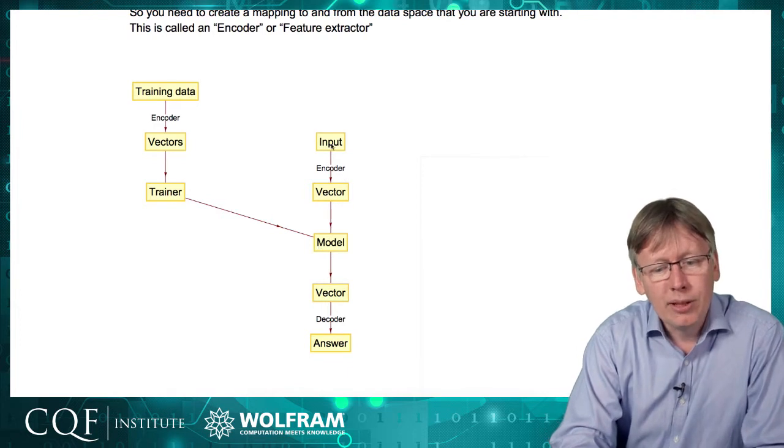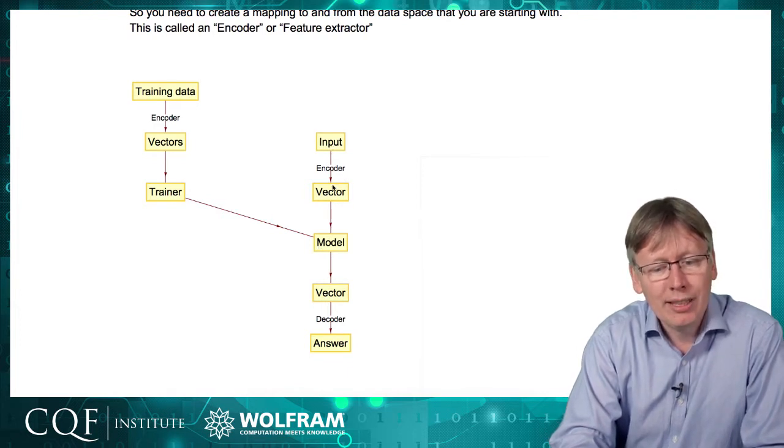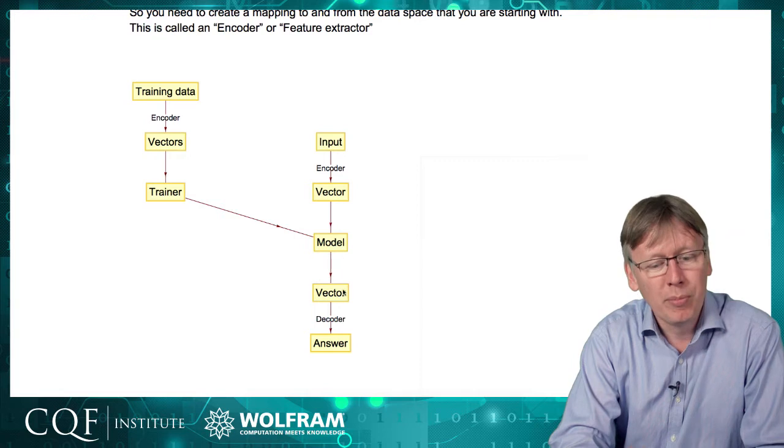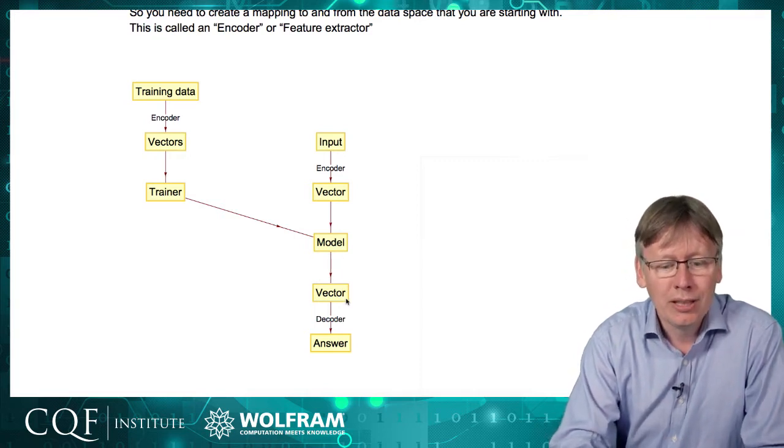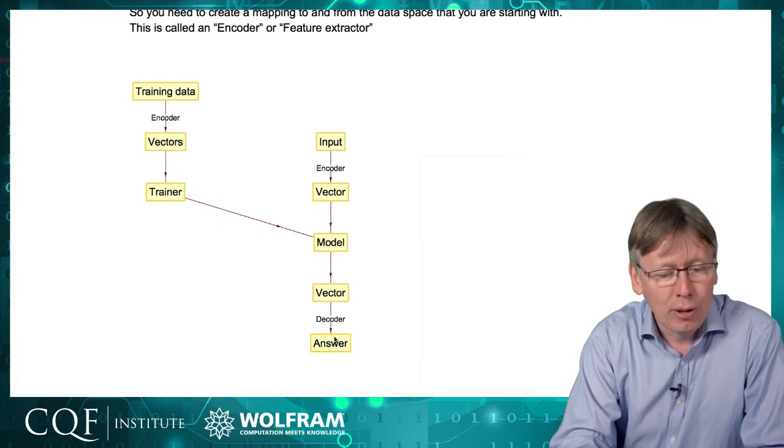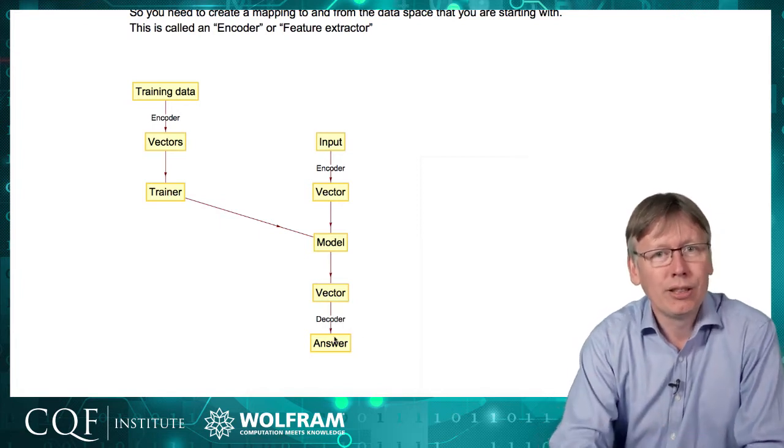When we use it, the input is put through exactly the same encoding process in order to make a vector. The vector is put through the model to make a new vector that represents the class or the output. Then that goes through a decoding step to turn it into the prediction that we see.